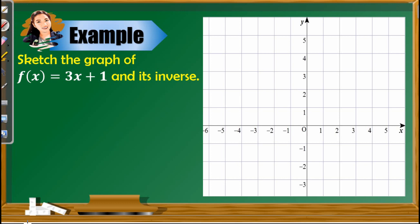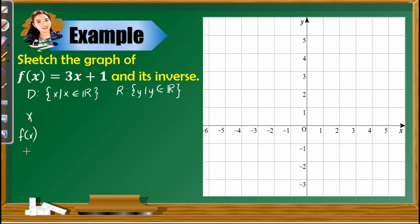First example: sketch the graph of f(x) = 3x + 1 and its inverse. Let's follow the steps provided. We have a linear function, and as we know, the domain and range of a linear function are both sets of real numbers. So the domain is {x | x ∈ ℝ} and the range is {y | y ∈ ℝ}. Next, we create a table of values using any real numbers for x. You may have fewer or more than 5 values.